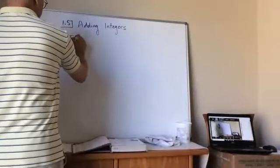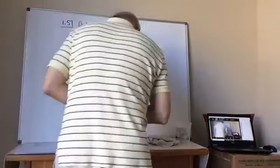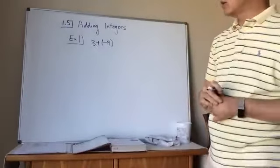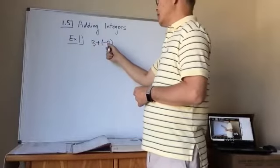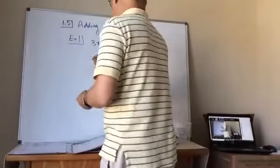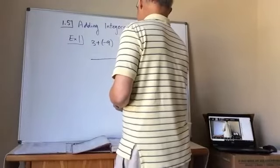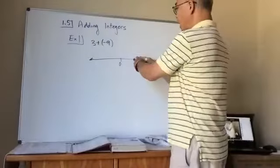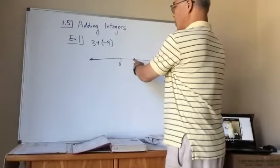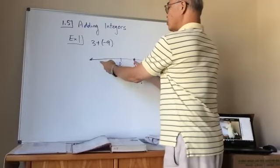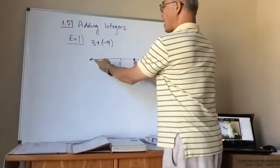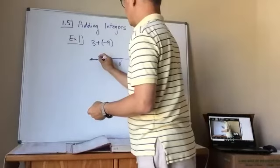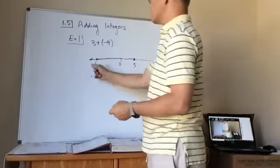Example number one: 3 plus negative 9. On the number line, if zero is here and I start at 3, when you add negative 9 you go to the left — so you go left nine spaces and end up at negative 6.